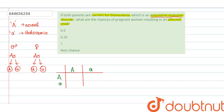Making the cross, we get offspring with genotypes: AA, Aa, Aa (which is the same as aA), and aa. These are the four possible genotypes of the offspring from this cross.